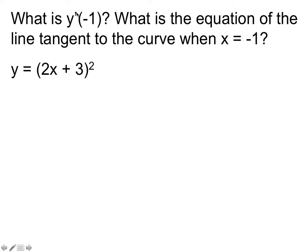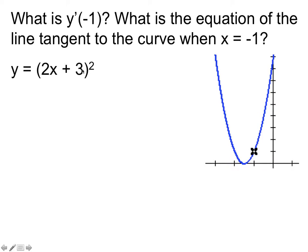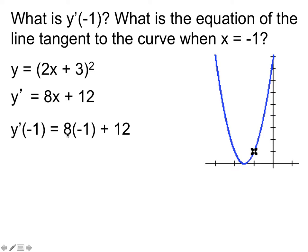Here's a question: what is the derivative of y at x equals negative one, and what is the equation of the tangent line to the curve? We did this derivative on the last example — the function y equals (2x plus 3) squared — and we know the derivative is 8x plus 12. We substitute x equals negative one: 8 times negative one plus 12 gives a slope of 4.